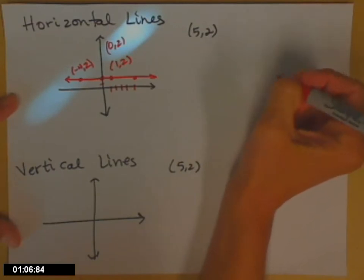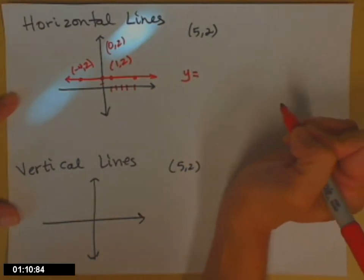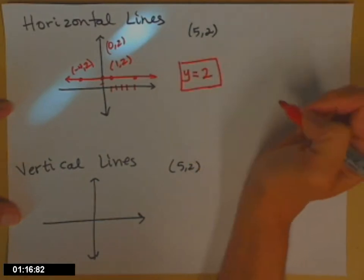So that's how we write the equation of a horizontal line. y equals, well, whatever it is that y equals. In this case, it equals 2. That is the equation of the red line.